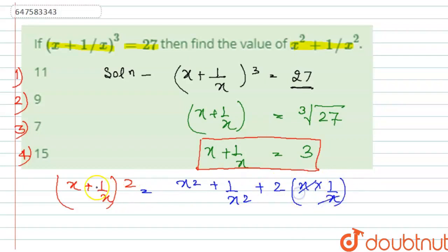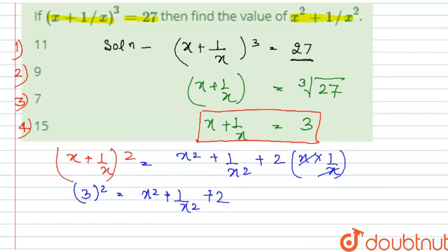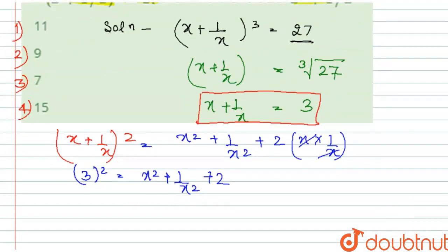So, 3 squared is equal to x square plus 1 by x square plus 2. Because here, x and 1 by x cancel out. This equation is 9 equals x square plus 1 by x square plus 2.